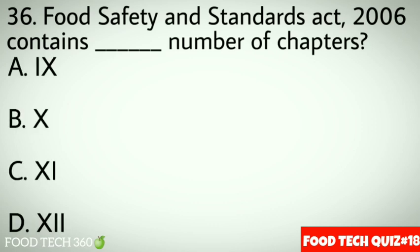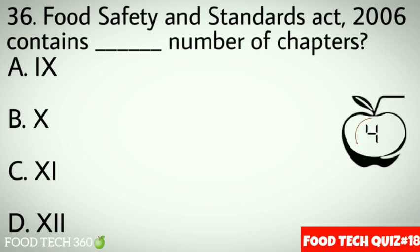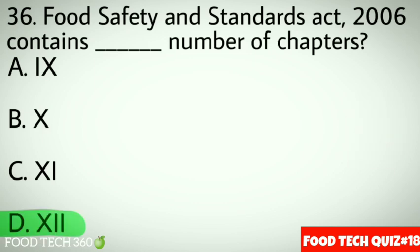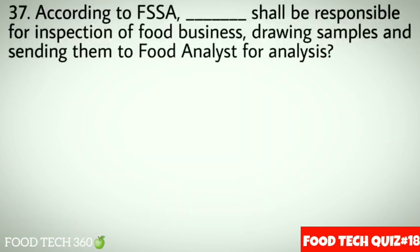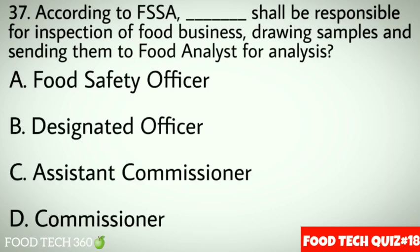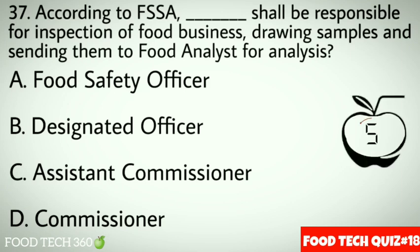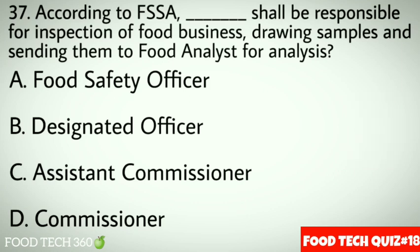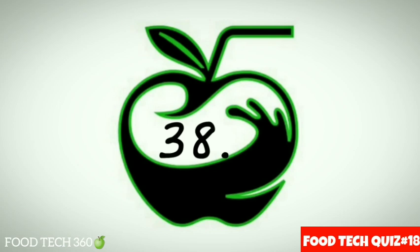Question 37: According to FSSA, dash shall be responsible for inspection of food business, drawing samples and sending them to food analysts for analysis. Options: A. Food Safety Officer, B. Designated Officer, C. Assistant Commissioner, D. Commissioner. Correct answer: A. Food Safety Officer. Question 38: NABL stands for — (question skipped in recording).